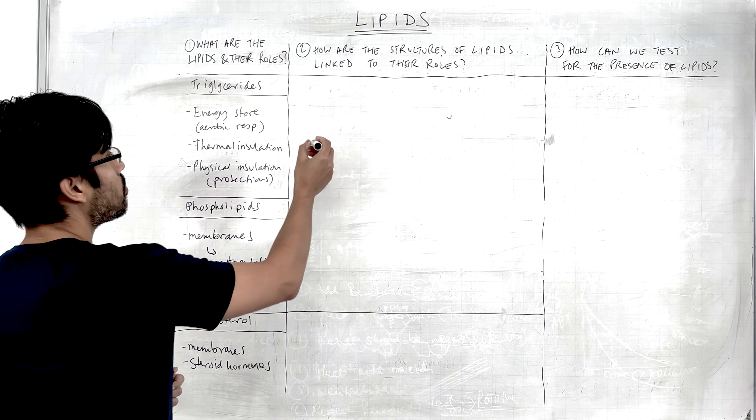Triglycerides — what are their functions? The function of triglycerides is essentially as an energy store. Triglycerides can be used for aerobic respiration. We tend to think of glucose as the main respiratory substrate, but glucose is an immediate source of fuel for respiration, while over the longer term we use fats as our energy store, and these are the triglycerides.